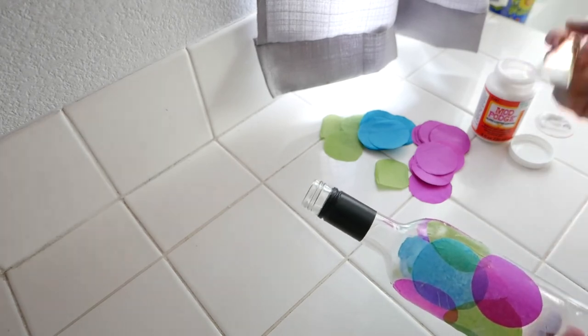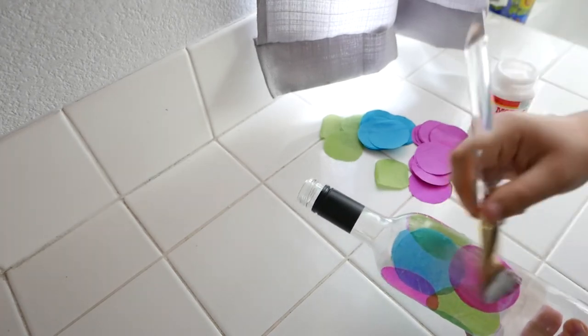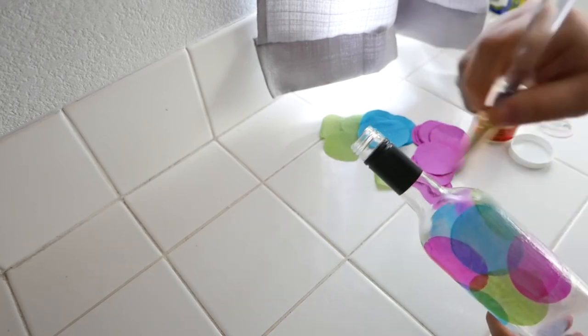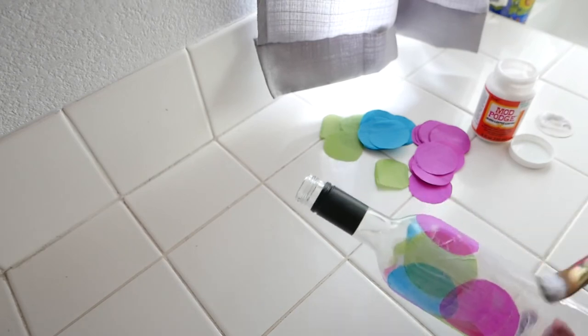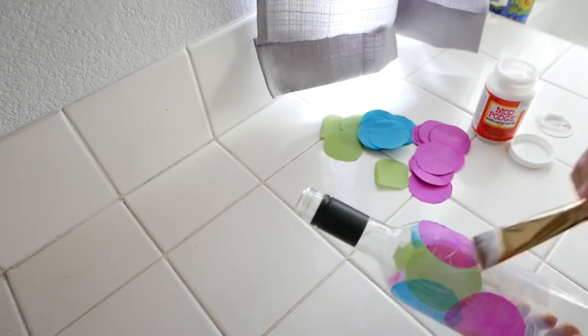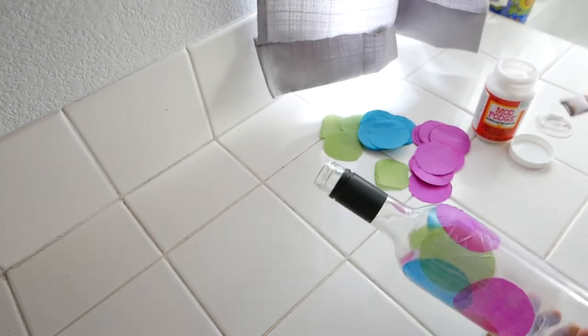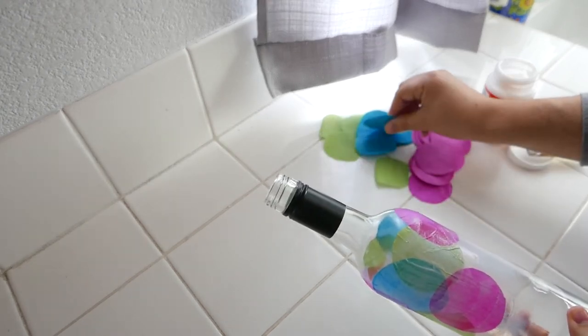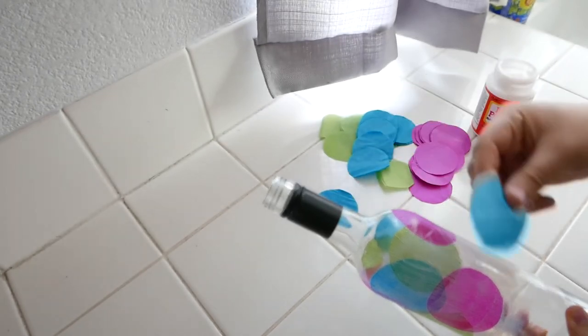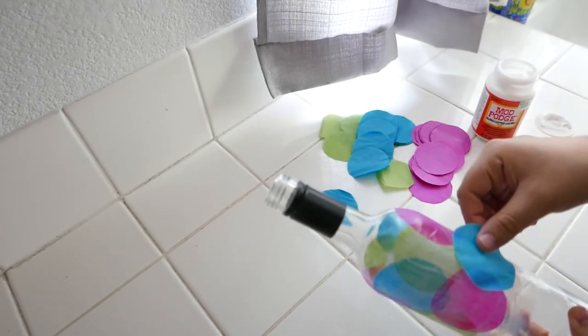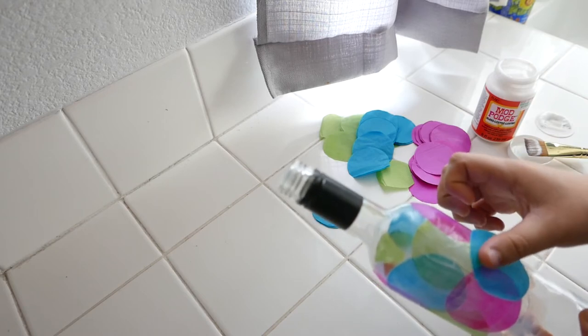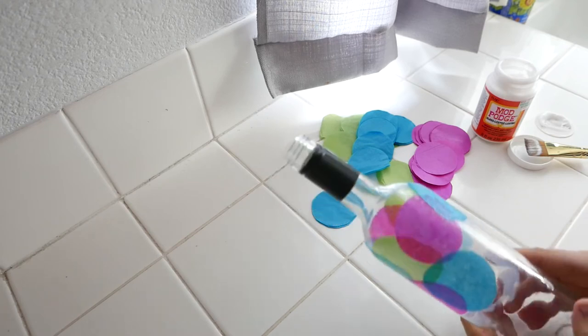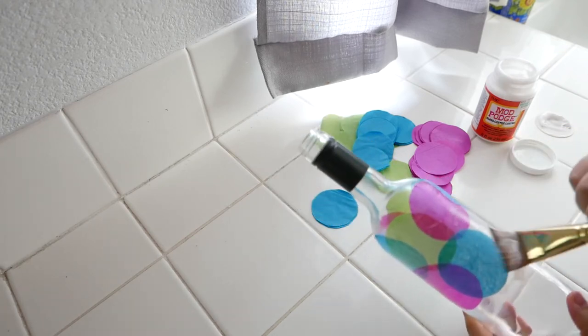So once I was nearing the completion of my second row, I decided to begin sealing these two rows together by applying a thin layer of Mod Podge from top to bottom. This was an effort on my behalf to begin sealing the tissue to the bottle. And basically as I went along I would do these strokes from top to bottom to ensure that the shapes were sealed together.